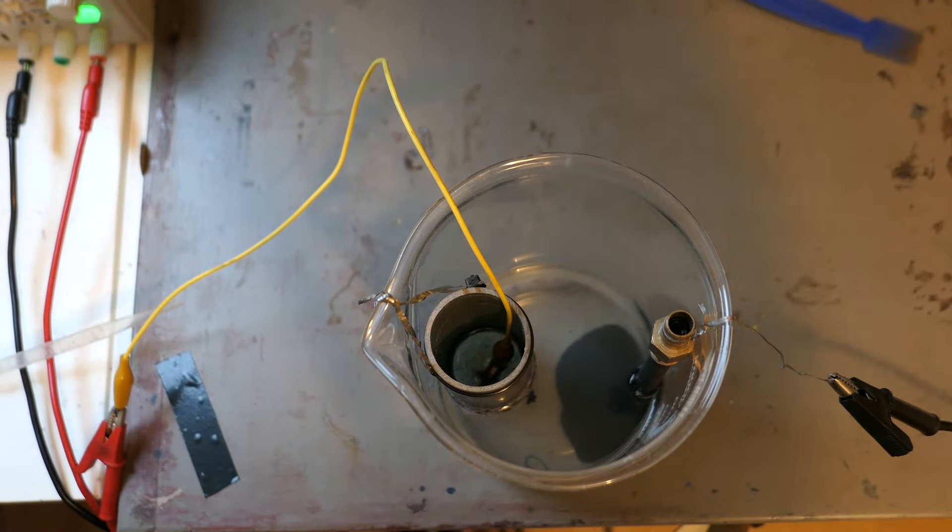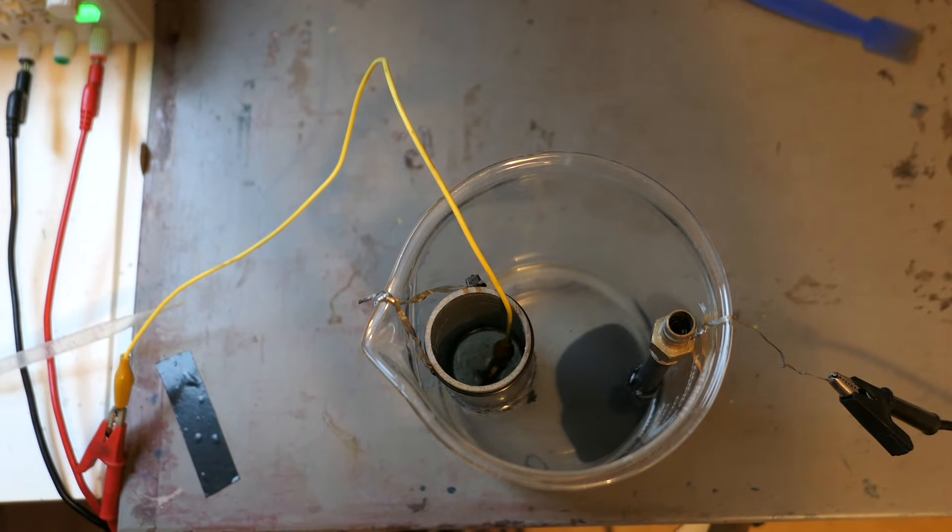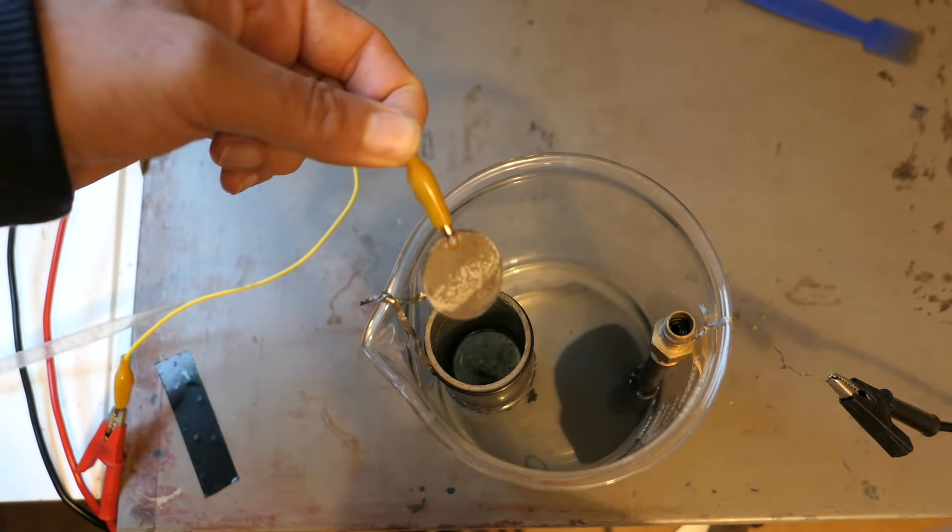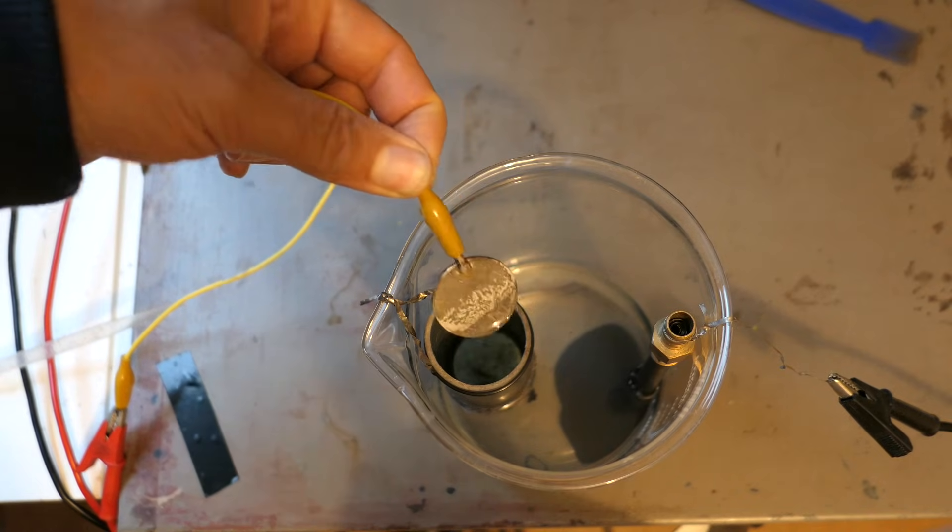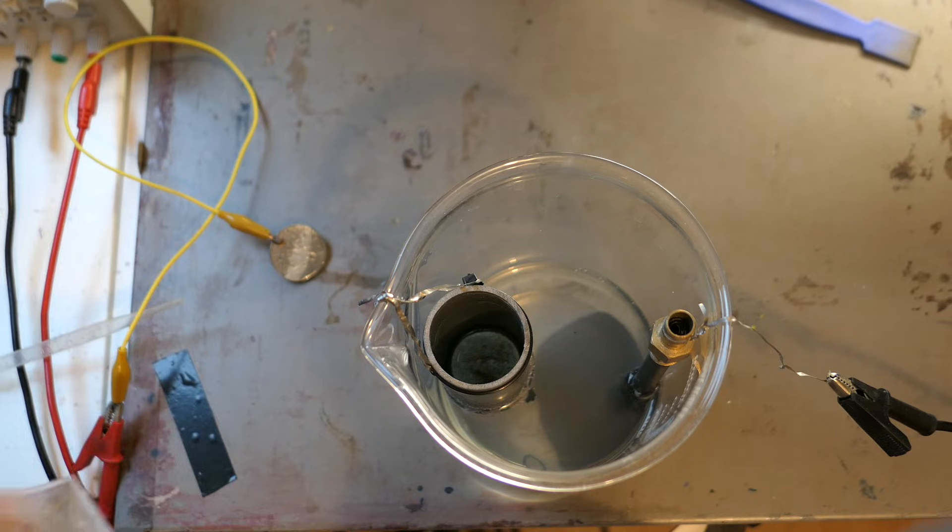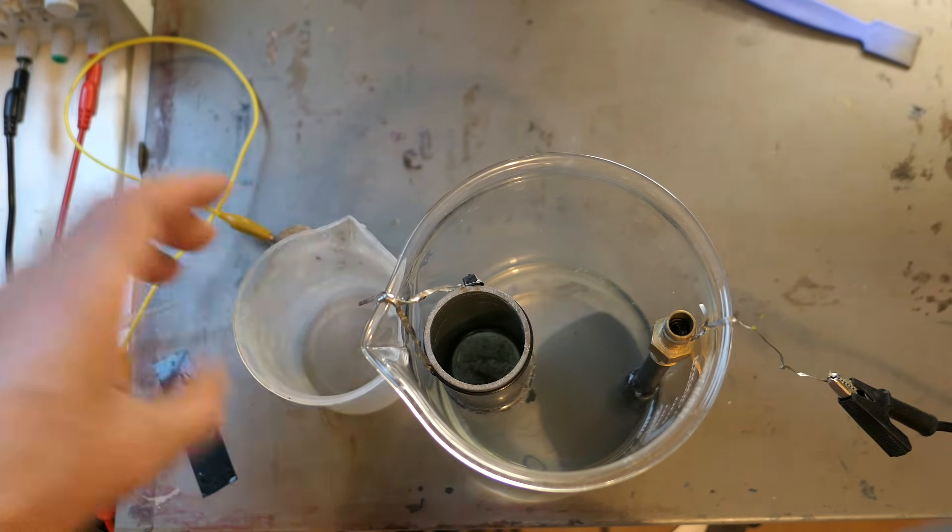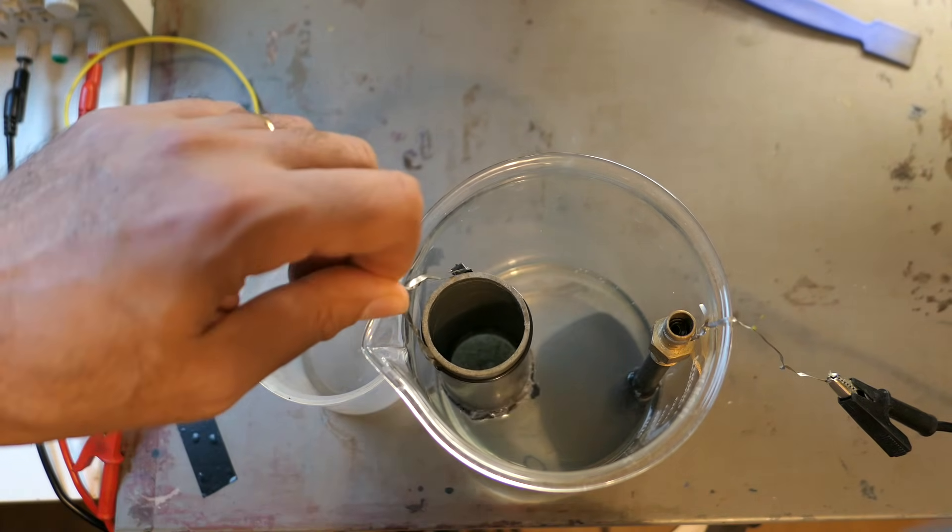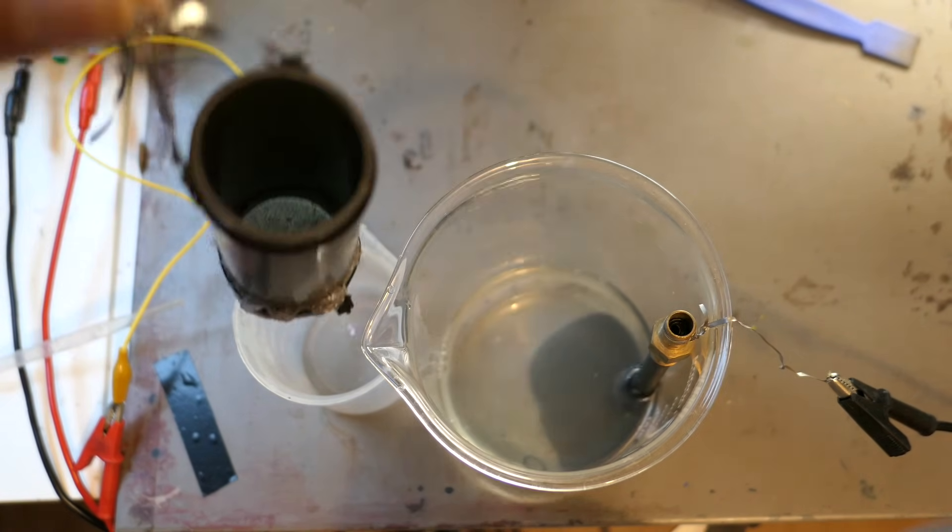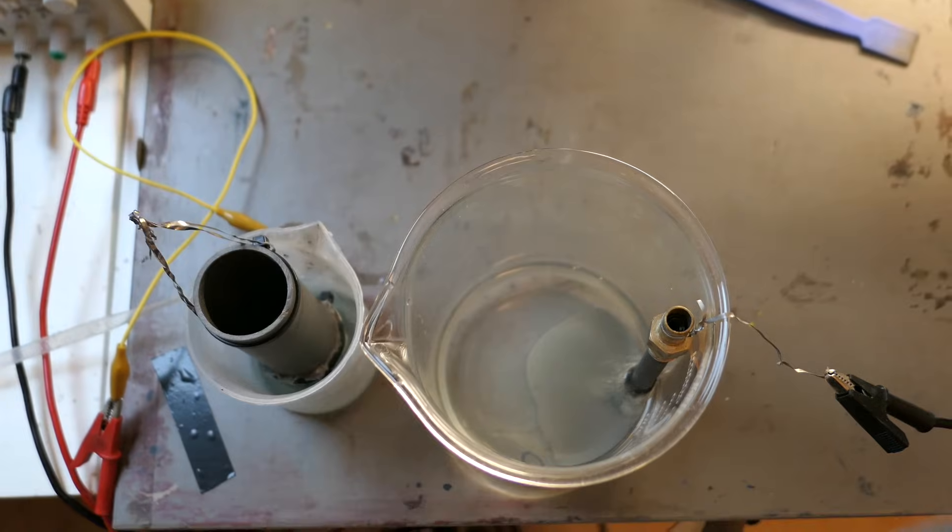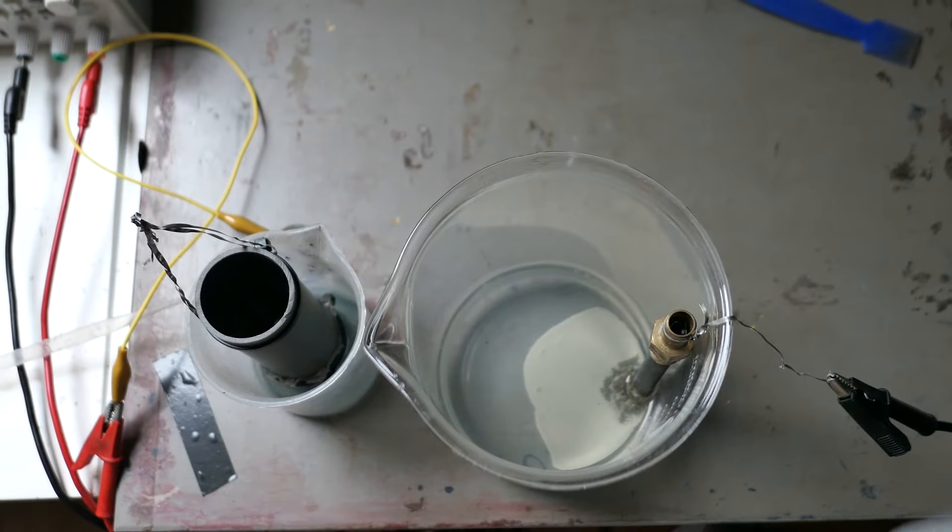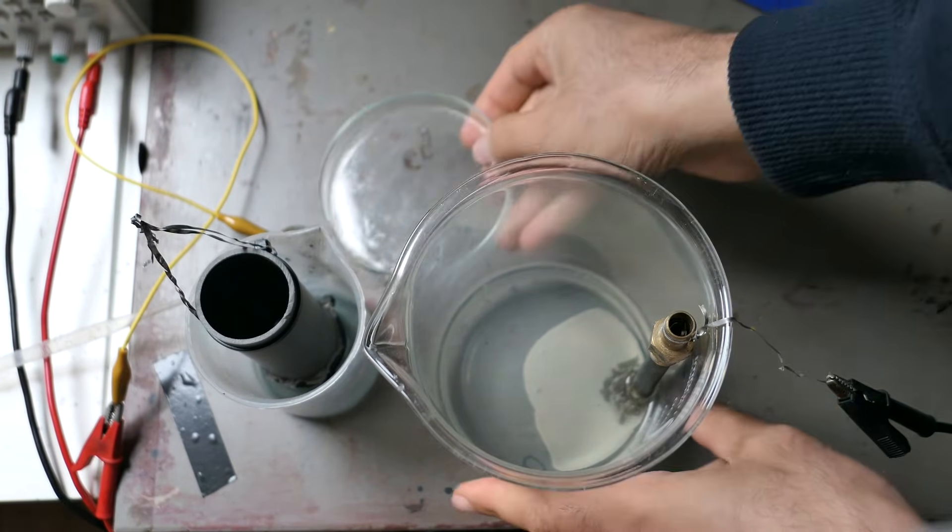One interesting thing you'll see during this process is how the silver deposit on the cathode changes over time. At the beginning, the deposit looks dark, almost black. When we finally turn off the power, something interesting happens. The silver deposit starts to turn into a more familiar, shiny silver color. I'm not entirely sure why, but if any of you have more experience with this, I'd love to hear your thoughts in the comments. Feel free to share your theories or any insights.